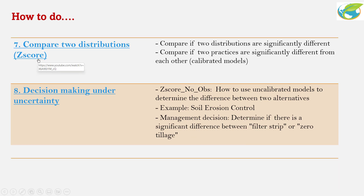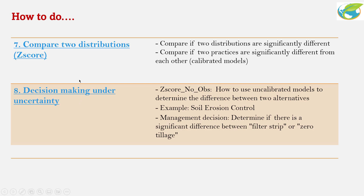How-to videos number seven and eight use the Z-score statistic to compare two distributions. You can compare to see if two different BMPs are actually different from each other, or if you apply a BMP, does it make a big difference compared to when you didn't apply the BMP — so you can compare the output distributions.